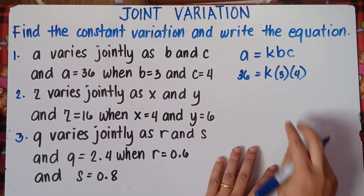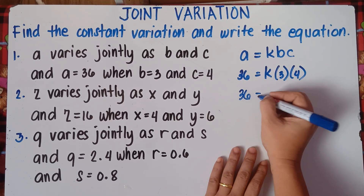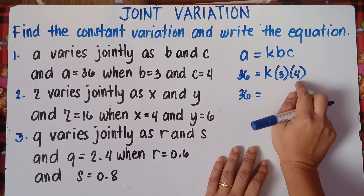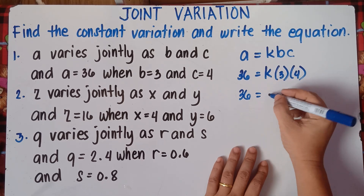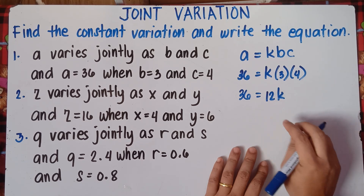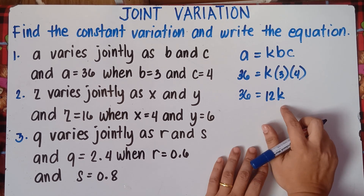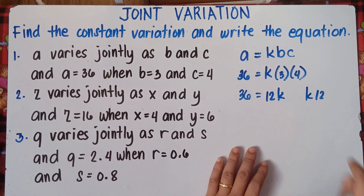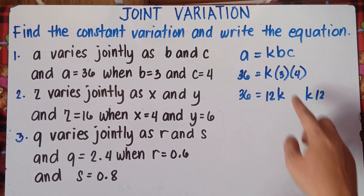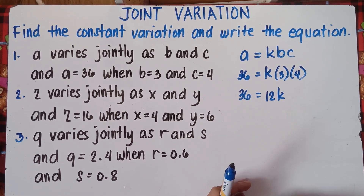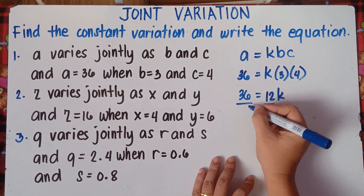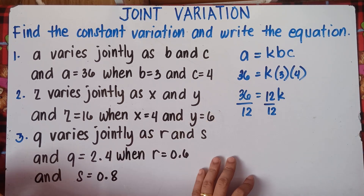Multiply and simplify. So this will be 36 equals K times 3 times 4, that is 12K. The number should come first before the letter — it should be 12K. So 3 times 4 is 12, times K, that is 12K. Now to get the value of K, simply divide both sides by 12 to eliminate 12K. So divide by 12.